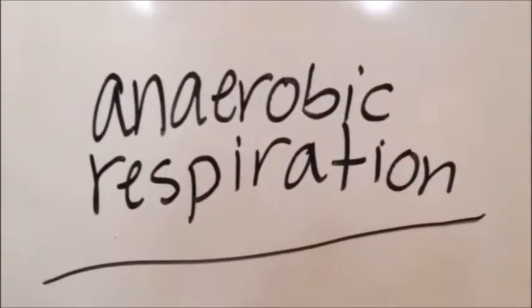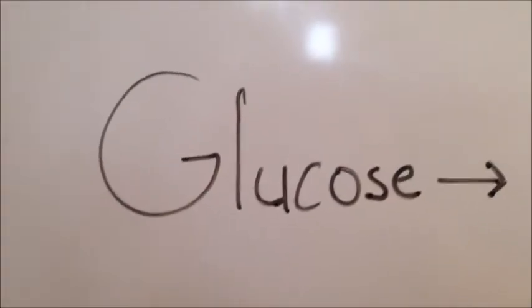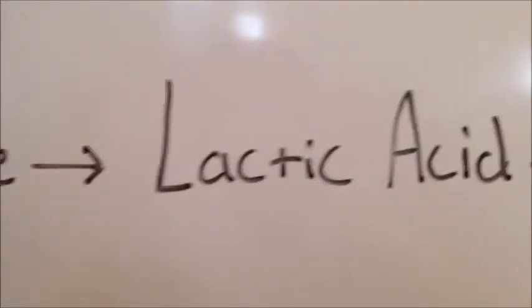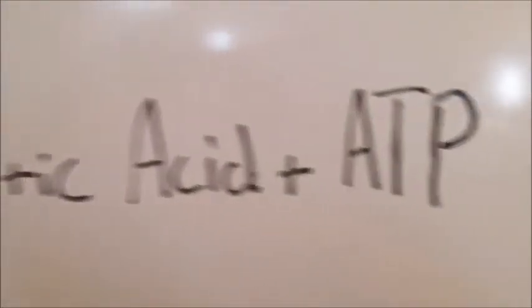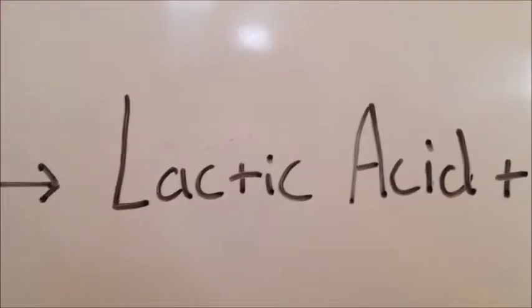Anaerobic respiration is the body's backup plan for energy. Like aerobic respiration, this process uses glucose to make ATP, but doesn't require oxygen. Our body doesn't use it as much as aerobic respiration because it is much less efficient and produces a less-wanted byproduct.